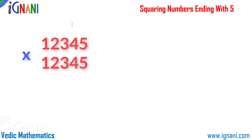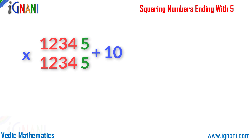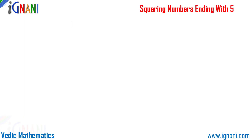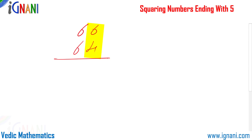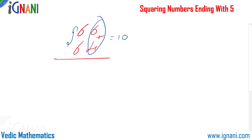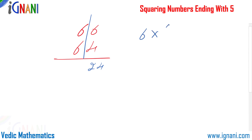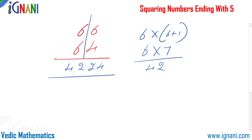There are two conditions for this multiplication: first, the last digits should add up to 10; second, the remaining digits should be the same. Let's try multiplying 66 with 64. Here, 6 plus 4 equals 10, and the remaining digits are both 6 — conditions satisfied. Now, 6 into 4 is 24 on the right. On the left, 6 into 6 plus 1 is 6 into 7, which is 42. So the answer is 4224.